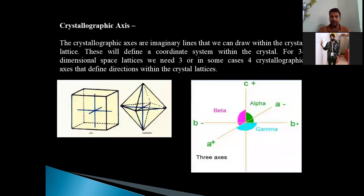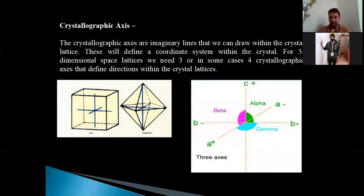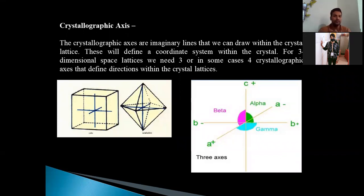The crystallographic axes are imaginary lines that we can draw within the crystal lattice. You must understand that these are imaginary lines — we don't have the line physically. We draw an imaginary line within the crystal so that we can measure, arrange, or explain that crystal on the basis of those imaginary lines. This will define a coordinate system within the crystal. For a three-dimensional space lattice, we need three, or in some cases four, crystallographic axes that define directions within the crystal lattice.